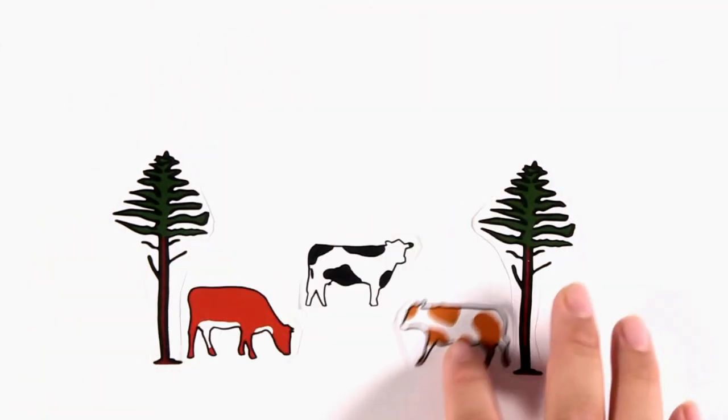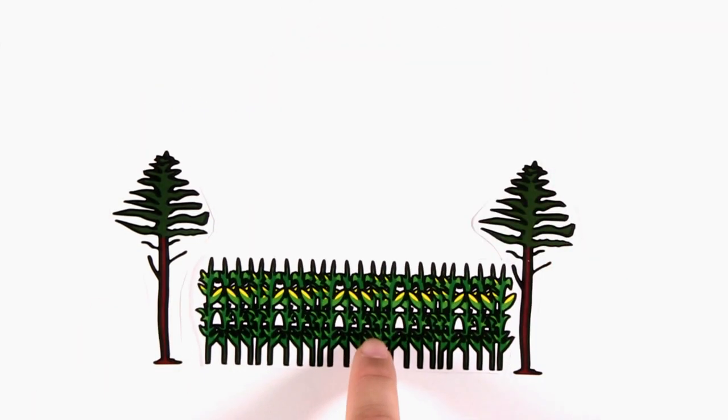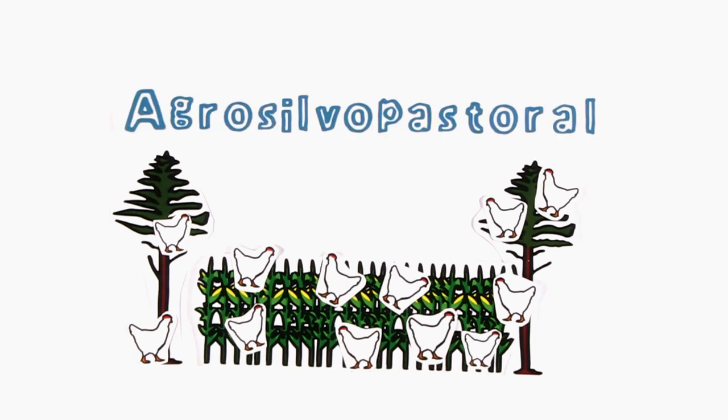The second, silvo-pastural, includes trees with animals. And the third, agro-silvo-pastural system, gathers trees, crops and animals together.